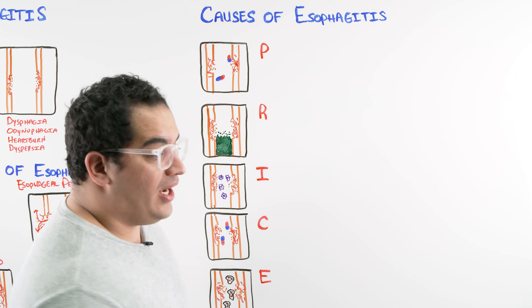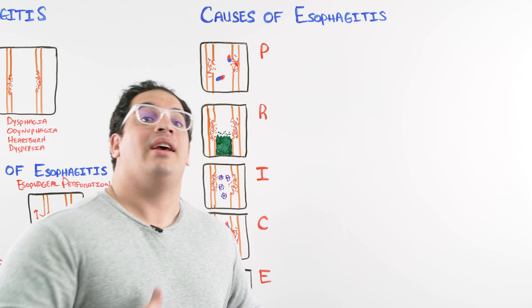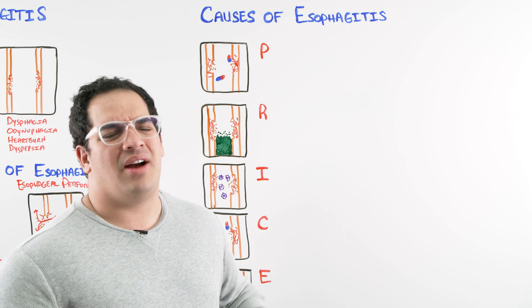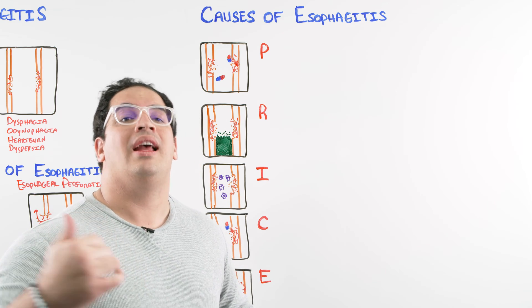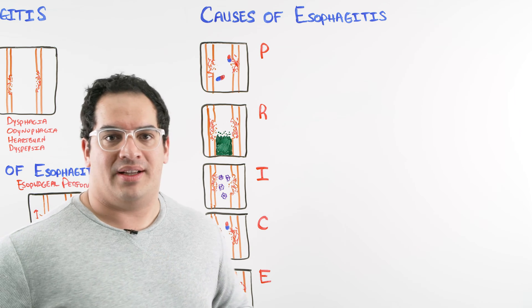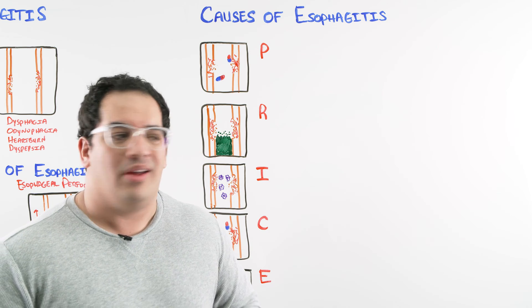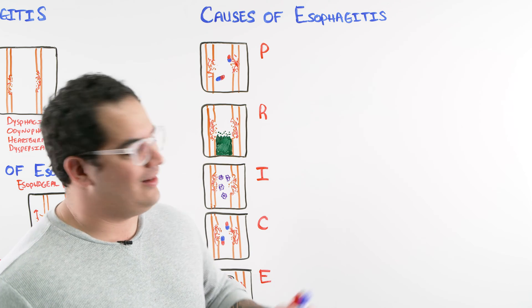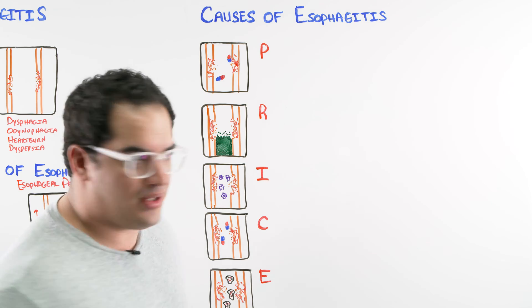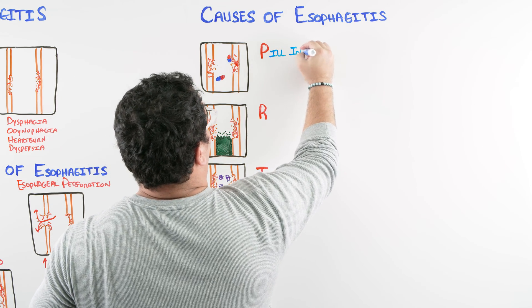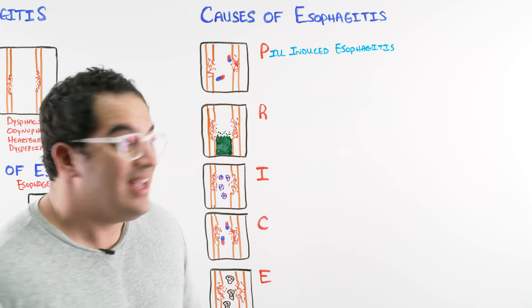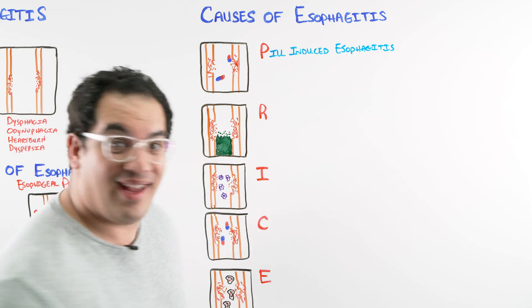Again, the complications associated with esophagitis include strictures, esophageal perforation which can increase the risk of infections and sepsis, or you can also have a GI bleed. Now let's talk about what are the causes of the esophageal inflammation. So esophagitis - we got an inflamed esophagus.